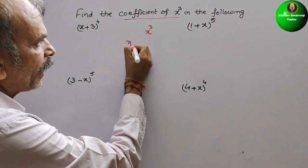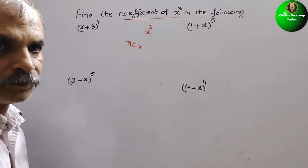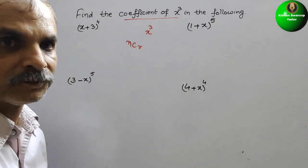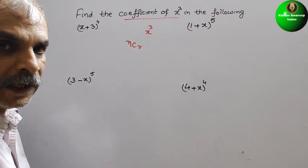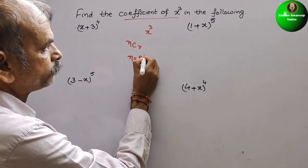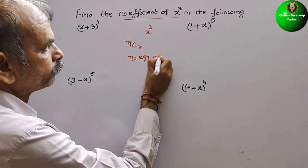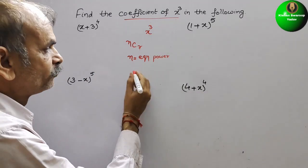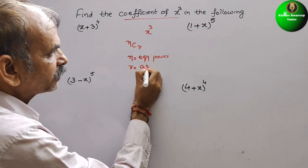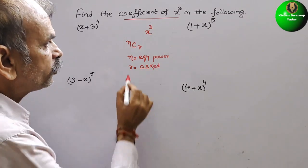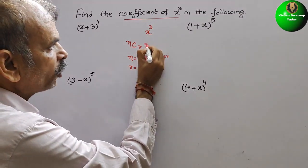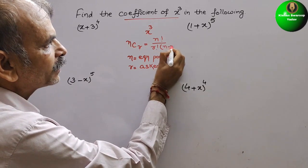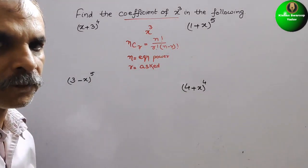What is that? It is nothing but N C R. So here N stands for the equation's power, and R stands for what they have asked. So this is nothing but N factorial by R factorial into N minus R factorial. That we have to do.